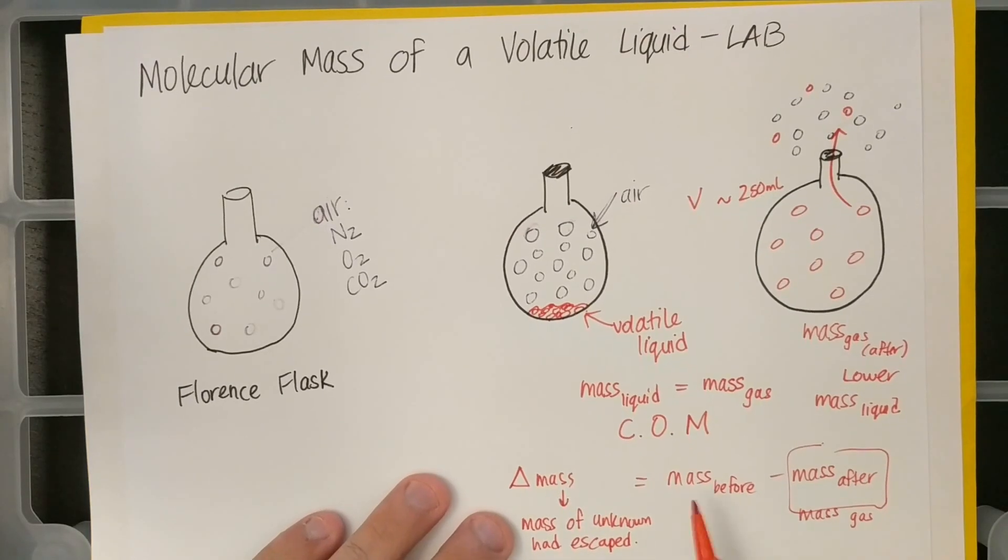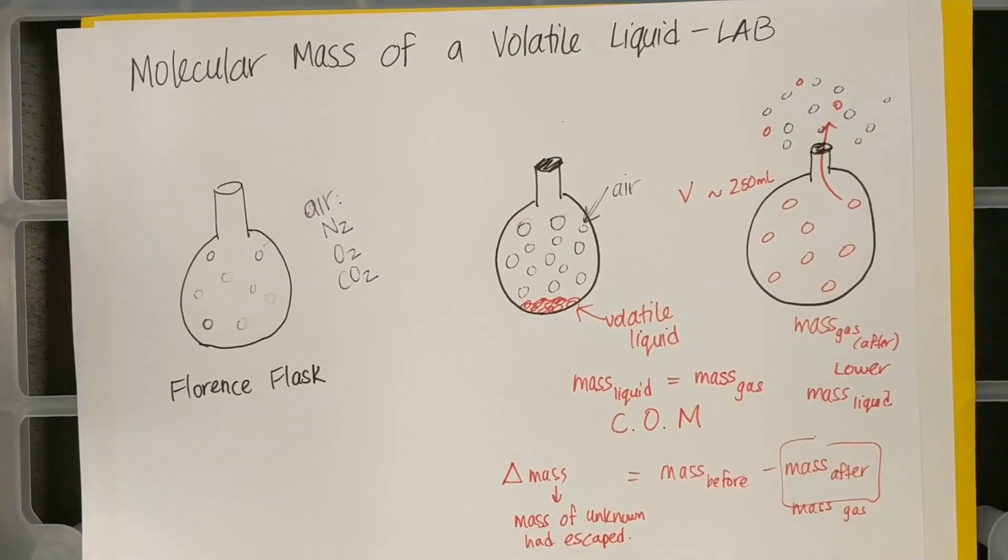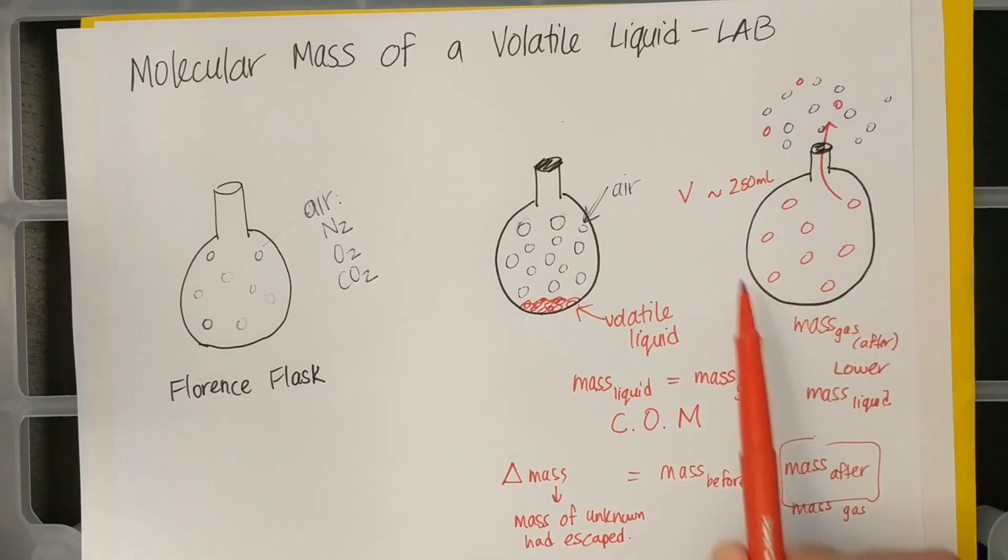And if you want to, and you should in your conclusions and calculations, this change in mass, delta mass, is the mass of the unknown that had escaped. And so I'm putting this subtraction here so you could talk about this in your conclusion and error analysis. That I can't use the original mass of the liquid anymore because some of it had escaped.